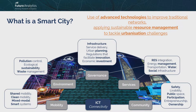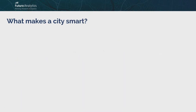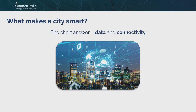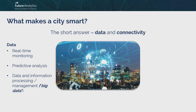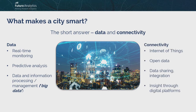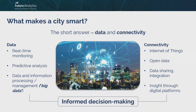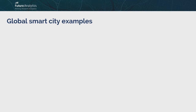Smart cities address mobility, the environment, government services, and community — with massive impacts on daily operation: mixed-modal transportation, pollution control, provision of infrastructure, urban planning, economic investment, renewable energy, energy management, safety, livability, public space participation. And data — data is so important, it's essential. What effectively makes a city smart is data and connecting that data: real-time data, predictive analysis, big data, Internet of Things, open data sharing and insights — leading to informed decision making.